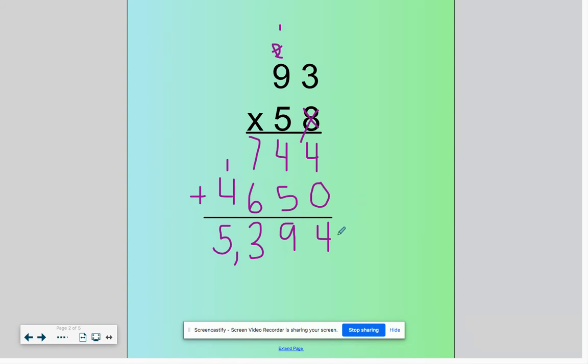We take our two lines and add them together to get an answer of 5,394. That's very close to an estimate. If we were to round 93 to 90 and 58 to 60, 90 times 60 is 5,400, which is very close to our answer.